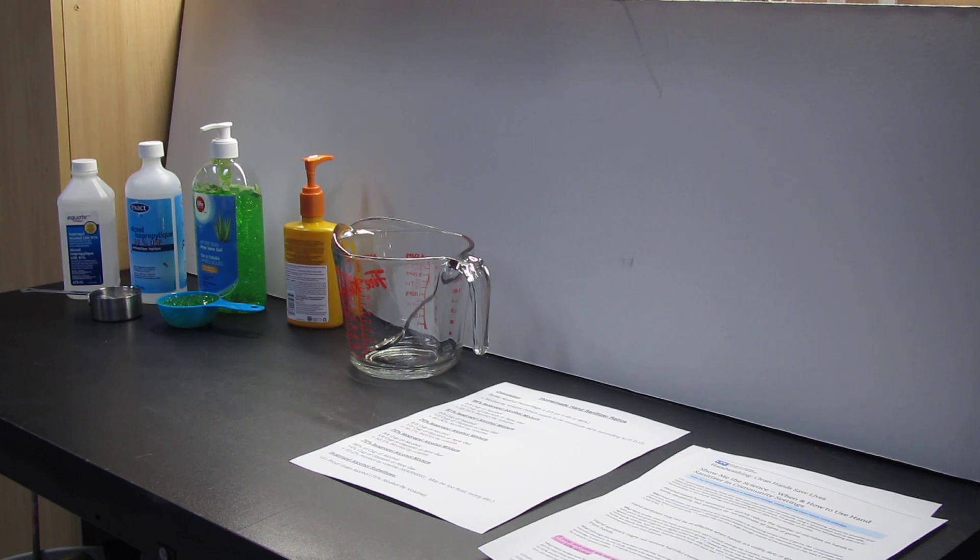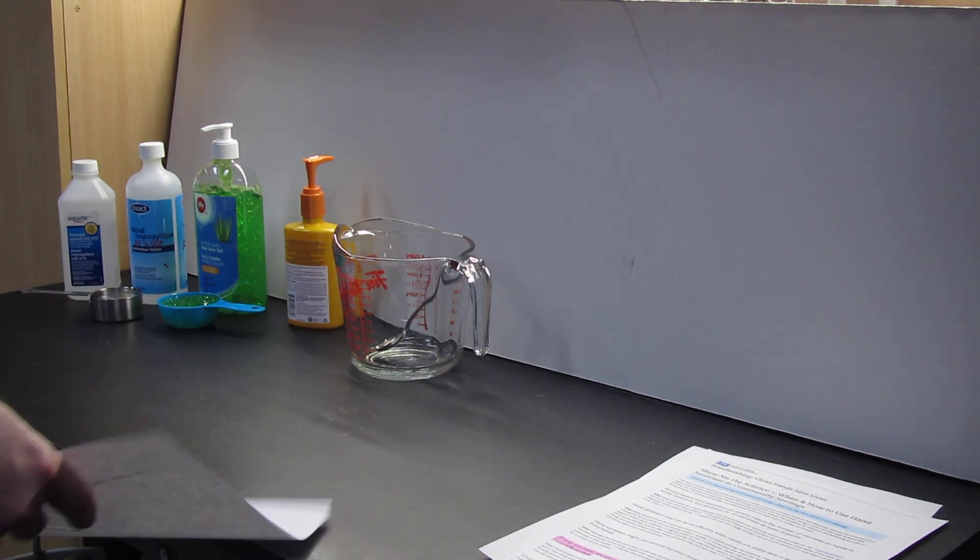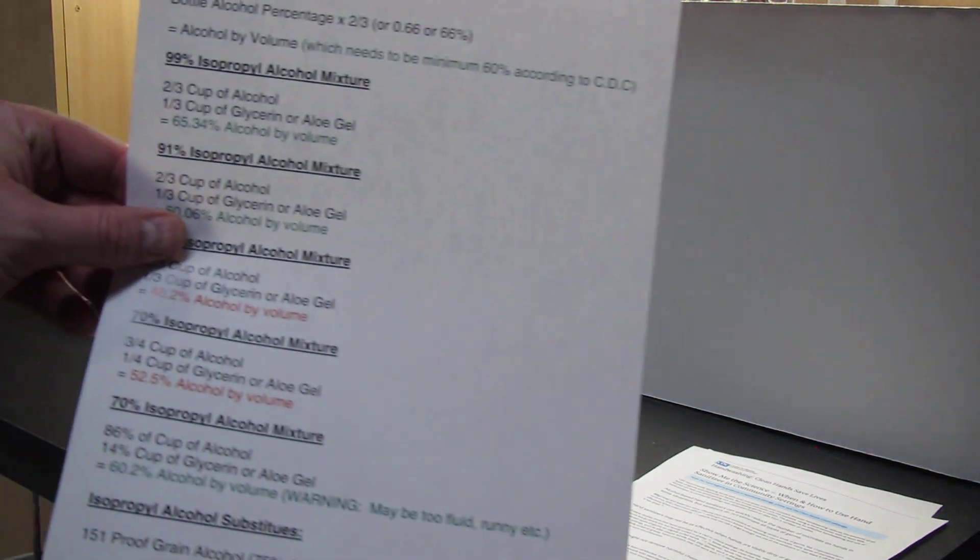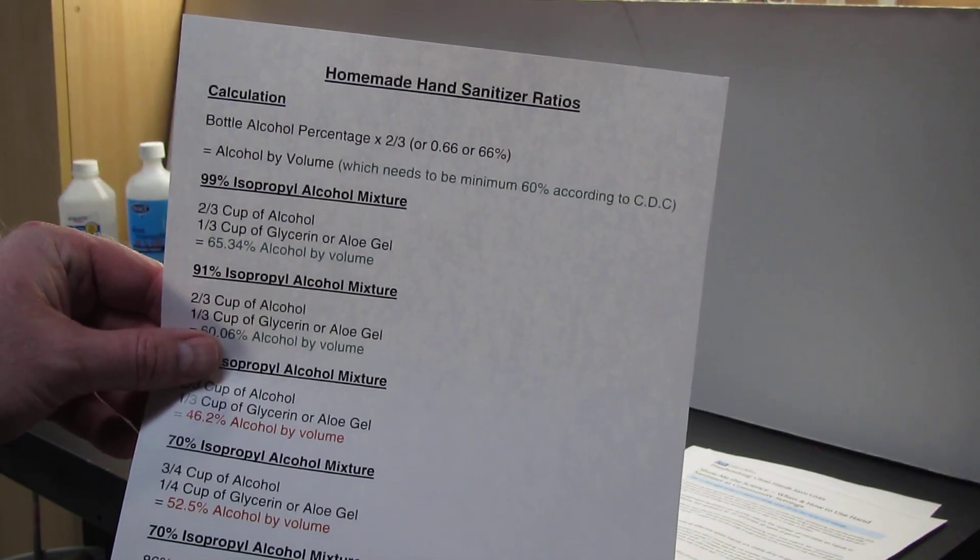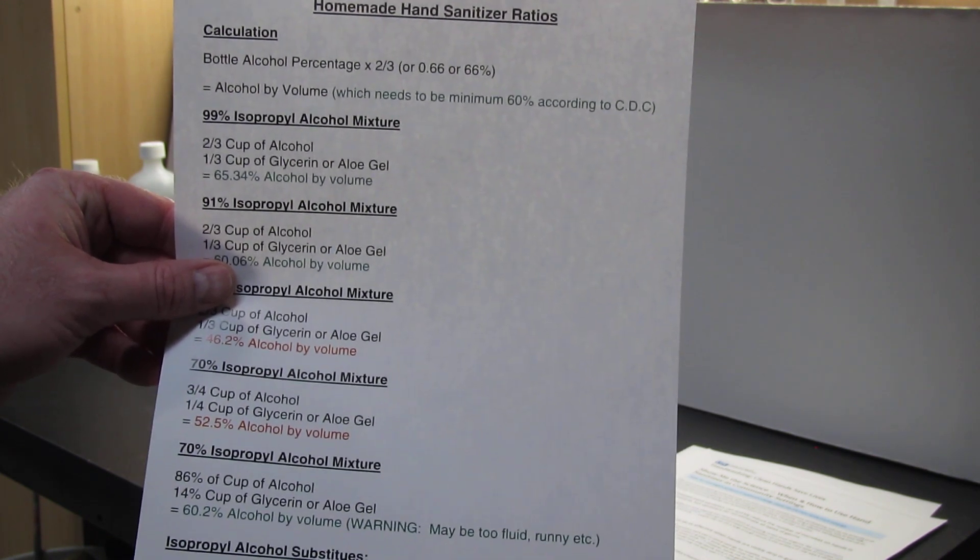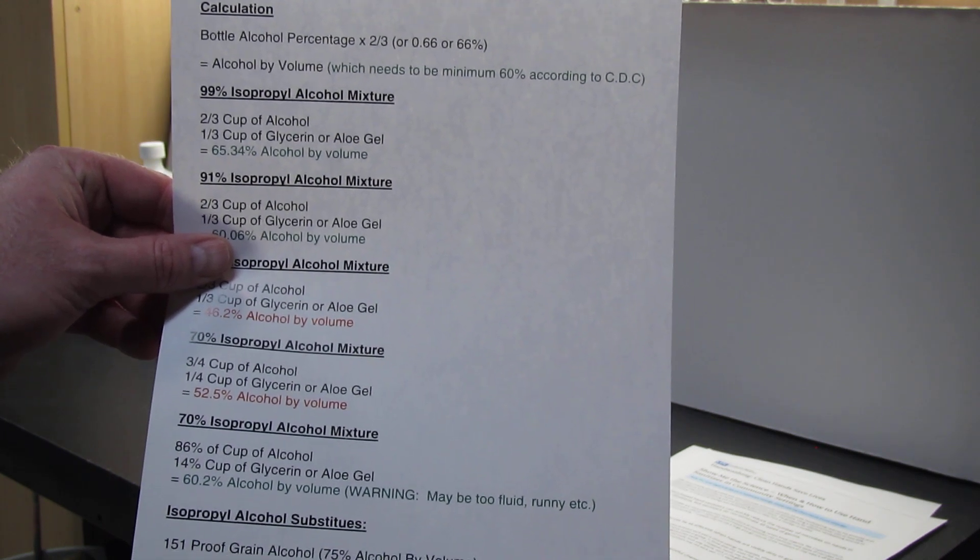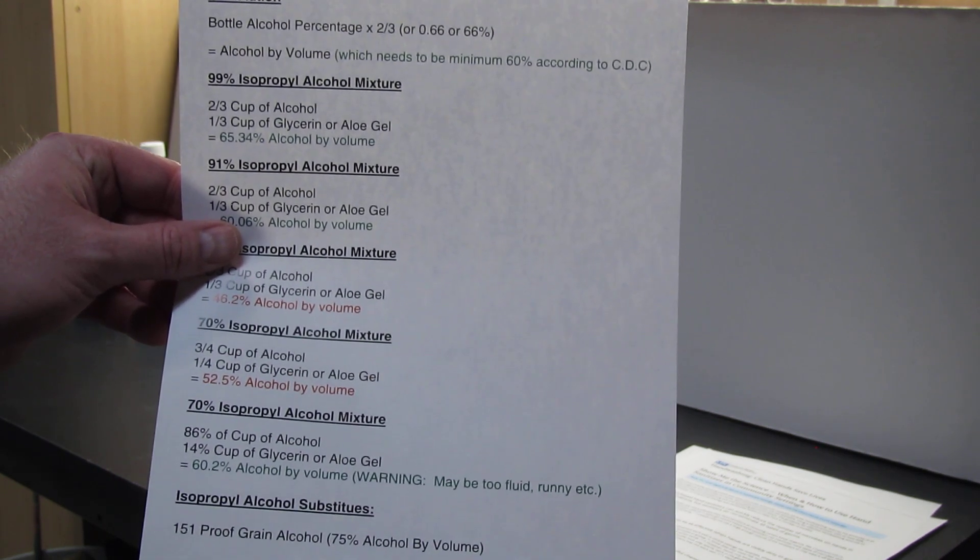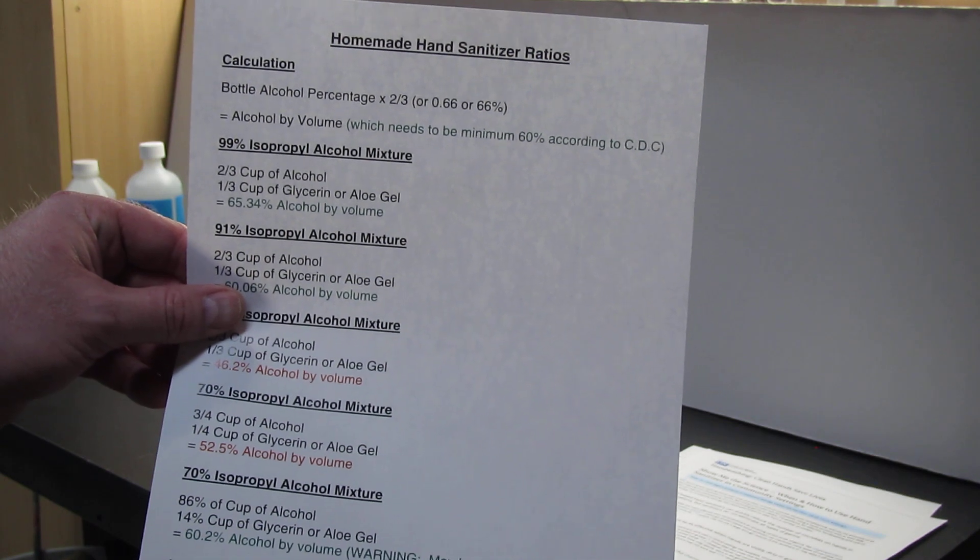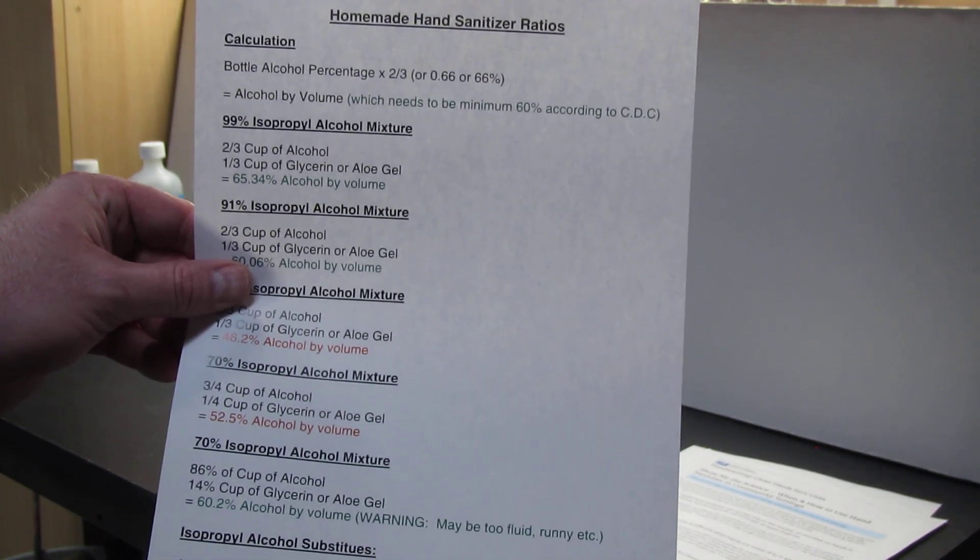Here's a quick and dirty calculation on how we can figure this out. So basically you take the bottle of alcohol, the percentage which is 91 or 99% alcohol is what's recommended, and if you were to times that by two-thirds or 0.66 or 66%, that gives your alcohol by volume in that actual hand sanitizer mixture.